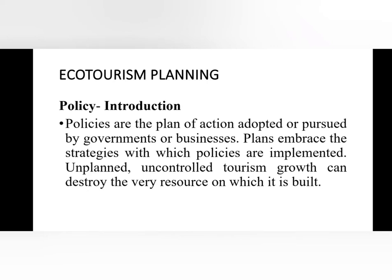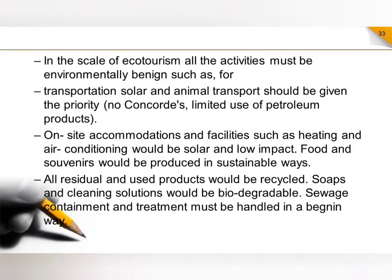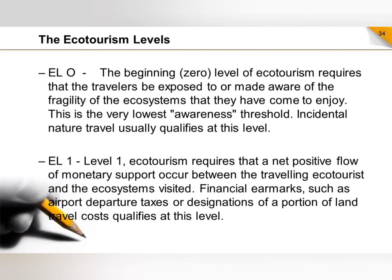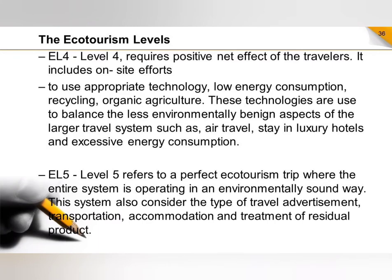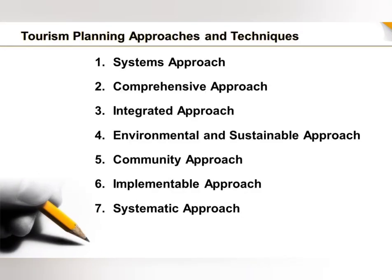When it comes to stages of planning, we can go from E0 to E5 level, where the environment eco-friendly scale ranges from 0 as the minimum to 5 as the highest standard of ecotourism activity. When it comes to approaches, we have: system approach, comprehensive approach, integrated approach, environmental approach, community-based approach, implementable approach, and systematic approach. We'll discuss each one.